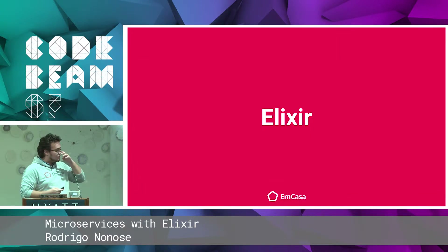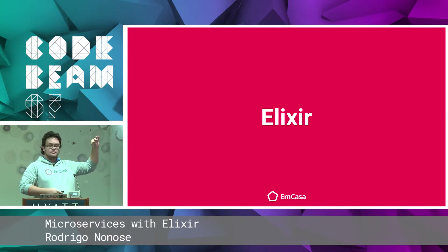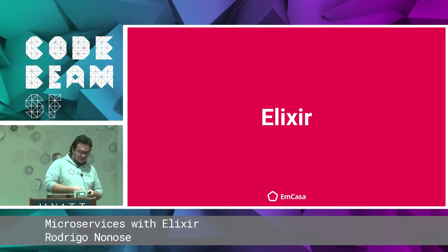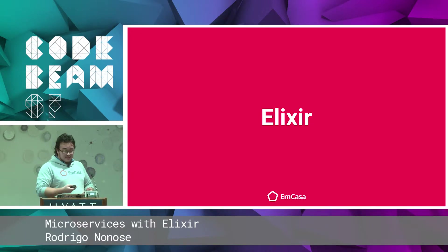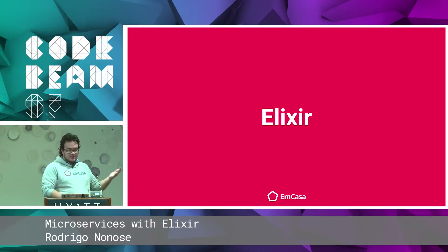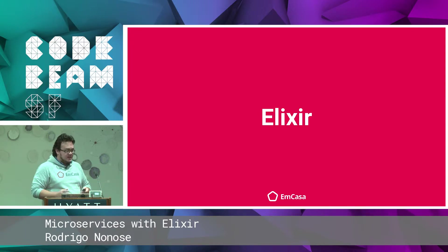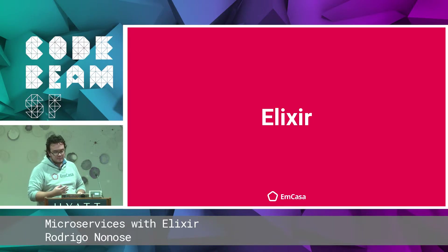So Elixir — for those who don't know anything about it — as an introduction: it's a functional language, it compiles to the BEAM bytecode, and it's designed for scalability and maintainability. One of my favorite things is that the developer experience is first class. So it's kind of right off the bat a good fit for a microservices-style mindset.